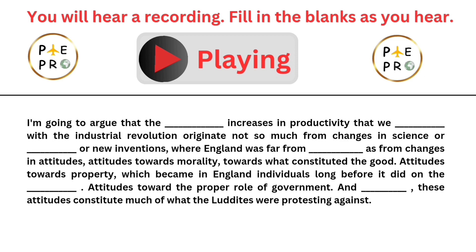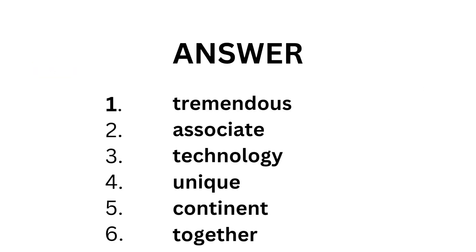The tremendous increases in productivity that we associate with the Industrial Revolution originate not so much from changes in science or technology or new inventions — where England was far from unique — but from changes in attitudes: attitudes towards morality, towards what constituted the good, attitudes towards property, which became individualized in England long before it did on the continent, and attitudes toward the proper role of government. Together, these attitudes constitute much of what the Luddites were protesting against.